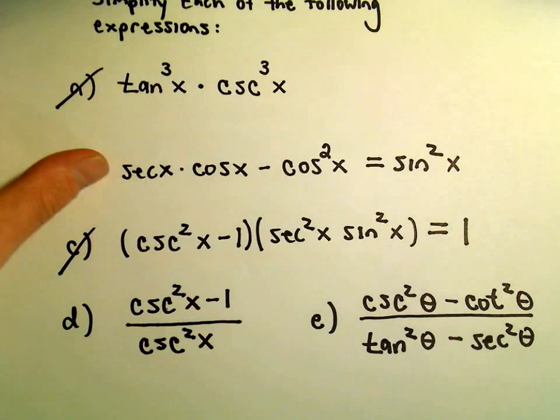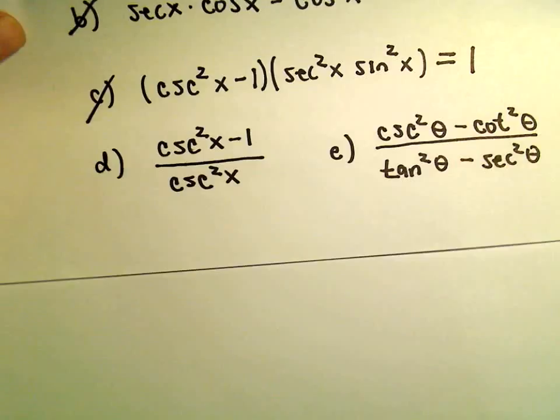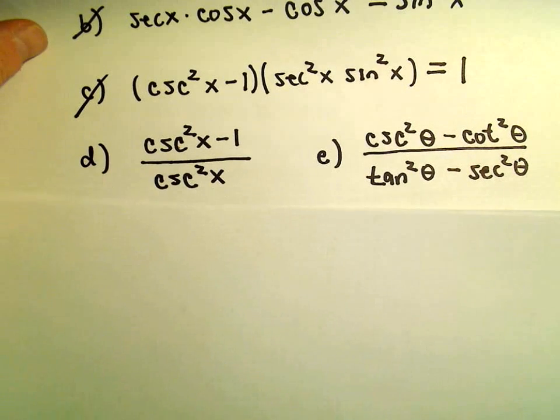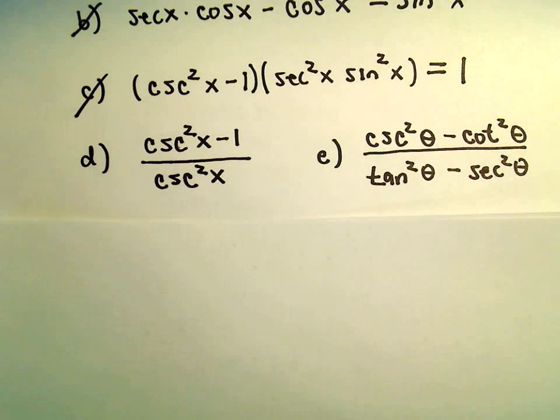So here we're going to simplify cosecant squared x minus 1 over cosecant squared x. And I'm going to again make use here.